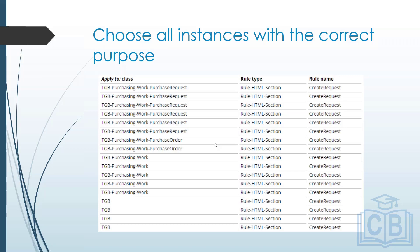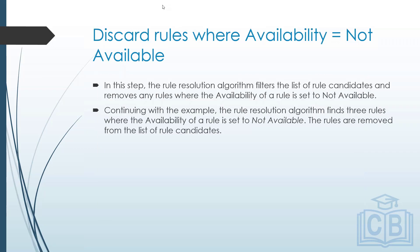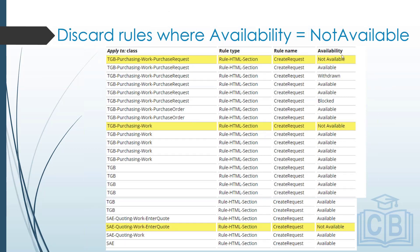After step one, we have around 10 to 15 rule candidates. Now the elimination process begins. Step two: discard rules with availability set to 'Not Available.' The system checks the availability of all rule candidates — any set to not available are discarded. Out of all candidates, the highlighted ones set to not available are directly removed, leaving a smaller number of rule candidates.